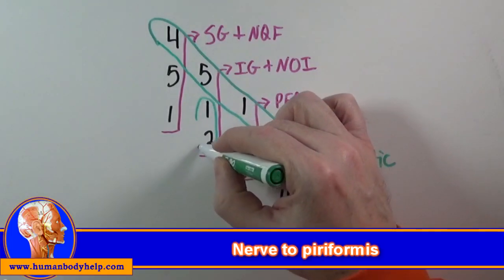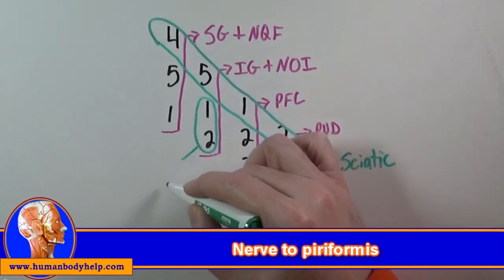And finally, S1 and S2 over here make the nerve to the piriformis muscle.